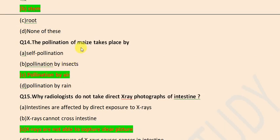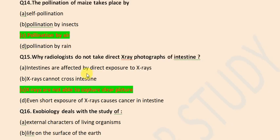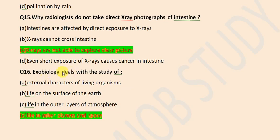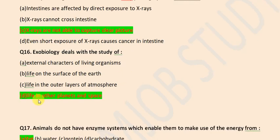The pollination of maize takes place by pollination by air. Radiologists do not take direct x-ray photographs of intestine because x-rays are not able to capture clear pictures.